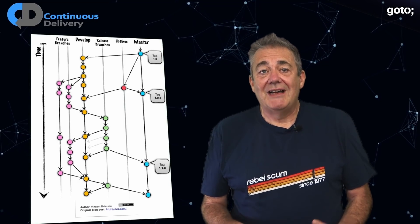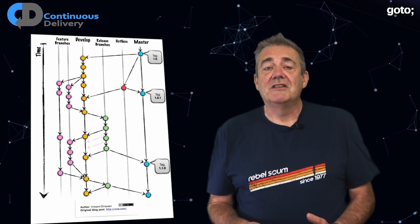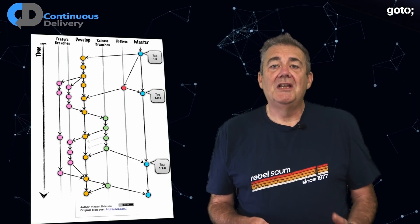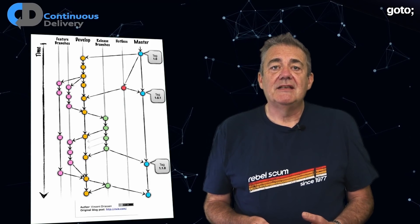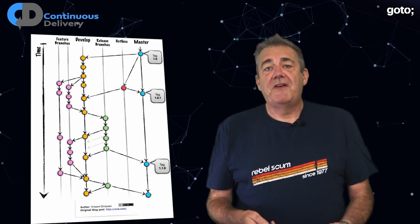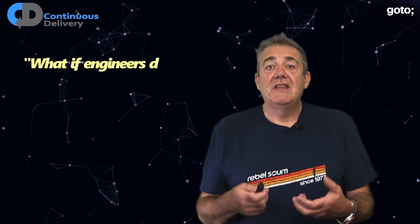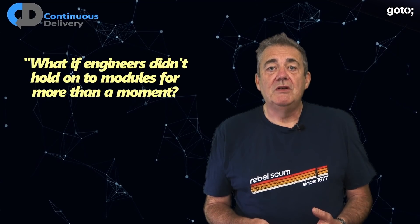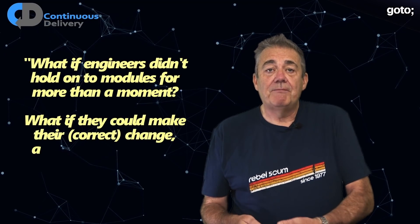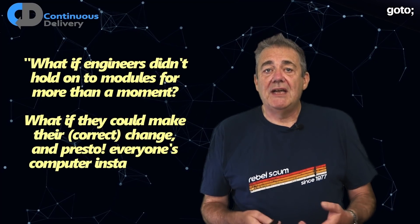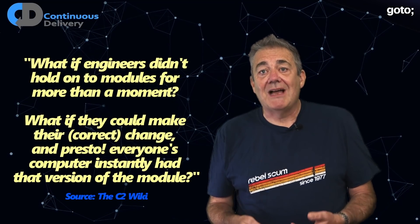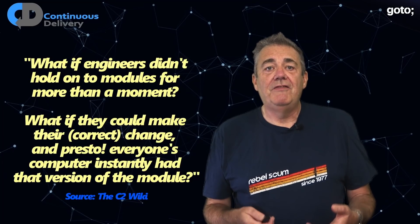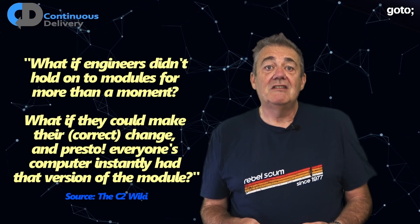Having said all of that, I have employed branching strategies like these on projects in the past, but that was before I learned how to do continuous integration properly. So what do I mean by it works against CI? Here's one of my favorite descriptions of continuous integration from the inventors: 'What if the engineers didn't hold on to modules for more than a moment? What if they made their correct change and, presto, everyone's computer instantly had that version of the module?' Continuous integration is about establishing and maintaining a shared accurate view of the state of the system that we're working on.